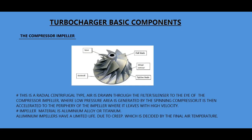Turbocharger basic components — the compressor impeller is a radial centrifugal type. Air is drawn through the filter silencer to the eye of the compressor impeller, where a low pressure area is generated by the spinning compressor. It is then accelerated to the periphery of the impeller, where it leaves with high velocity. Impeller material is aluminium alloy or titanium; aluminium impellers have a limited life due to creep, which is decided by the final air temperature.